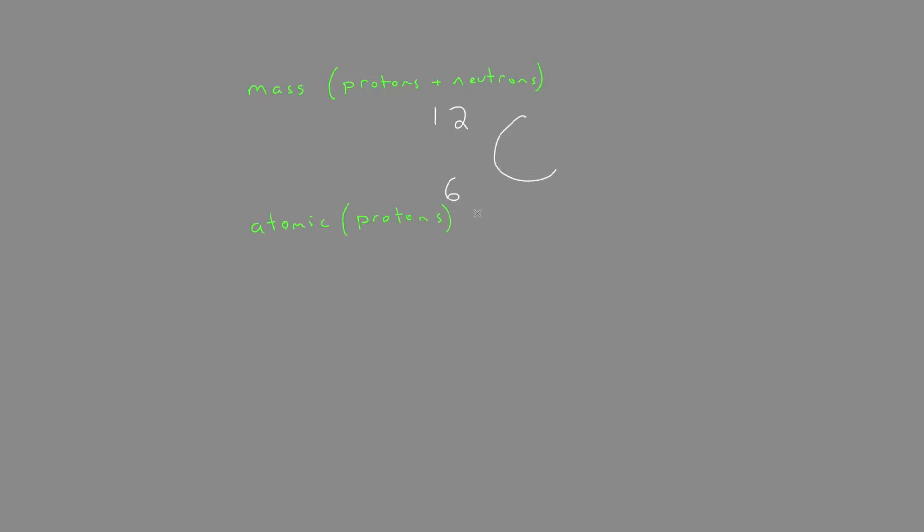So if we wanted to determine the number of neutrons, how would we do that? To do the calculation, we could show an equation, or you could just think about it. The number of neutrons equals the mass number minus the atomic number. So when we do that, we'll have 6.